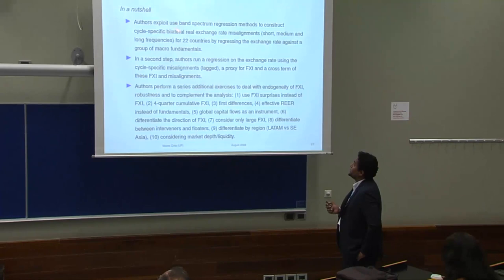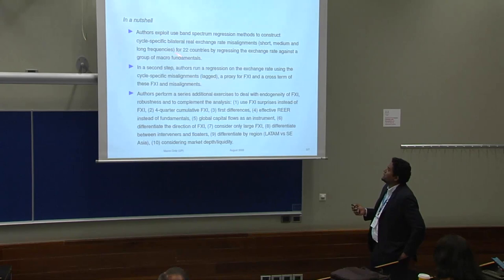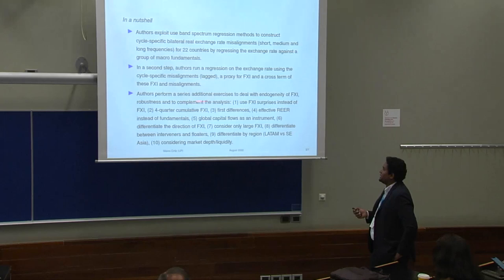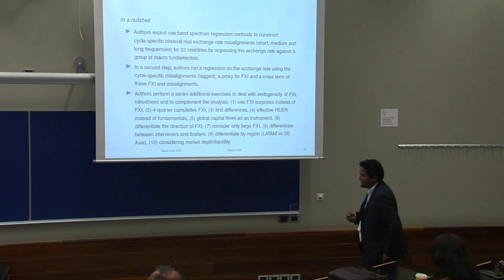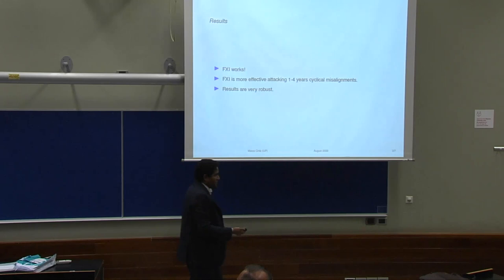In a nutshell, the authors exploit band-spectrum regression methods to construct cycle-specific bilateral real exchange rate misalignments for a set of countries. In the second step, the authors run a regression on the exchange rate using these cycle-specific misalignments. The authors then perform a very robust set of exercises, including the use of surprises, cumulative FX intervention, first differences, and a set of exercises very grounded in theory.